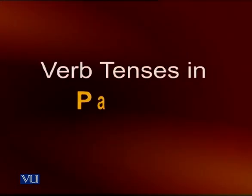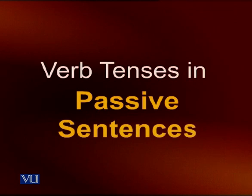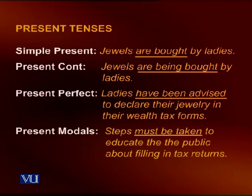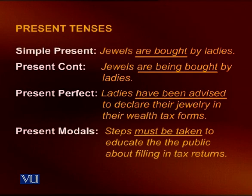The agent or doer of the action may sometimes be omitted. Looking at verb tenses in passive sentences — the simple present: 'jewels are bought by ladies.' Present perfect: 'ladies have been advised to declare their jewelry in their wealth tax forms.' With modals: 'steps must be taken to educate the public about filling up tax forms.'